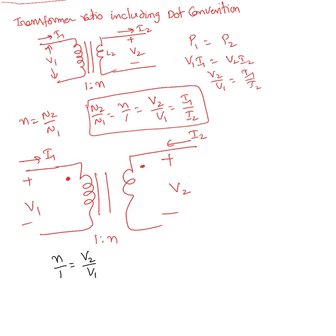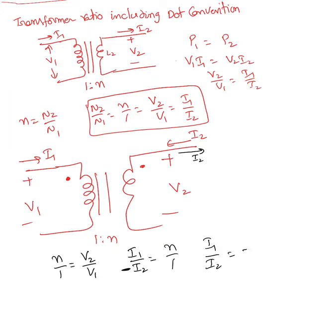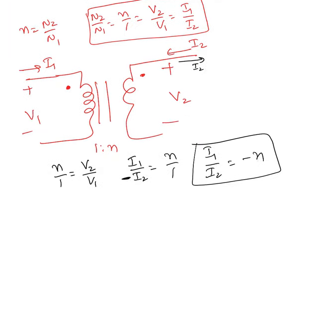Now for the current: i2 is supposed to leave the positive terminal, but it is entering instead. So we end up with i1 over i2 equal to negative n, or n over 1 equals negative i2, since the current is flowing in the opposite direction. So for this example, i1 over i2 equals negative n.